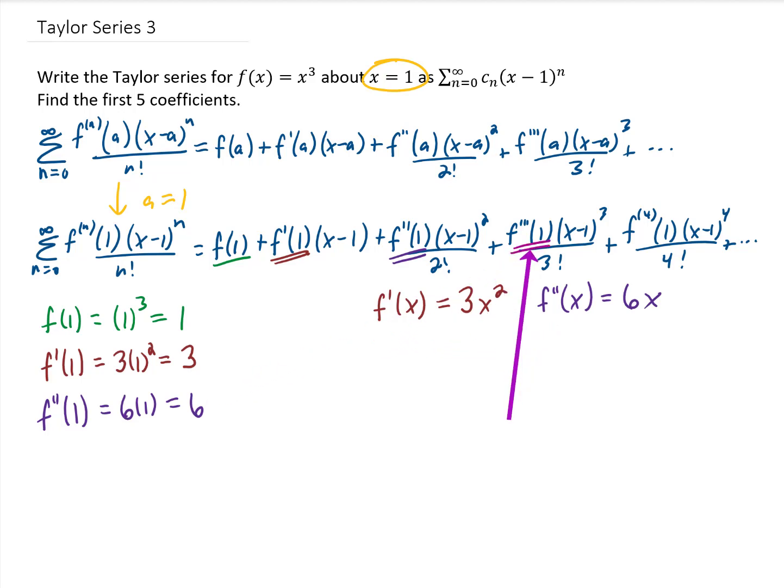Let's keep moving. This next term involves f triple prime of 1. And f triple prime can be found just by taking a derivative of f double prime. The derivative of 6x is 6. So f triple prime of 1 means we're going to replace x in this function with a 1. But there is no x here, so our result is just going to be 6. Finally, our last term that we need to find is the fourth derivative of f with 1 plugged into it. So let's find the fourth derivative of our function by taking a derivative of the third derivative. The derivative of 6 is just 0. So if we plug x equals 1 into that, we just get 0.